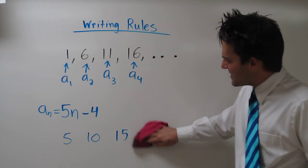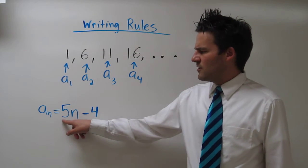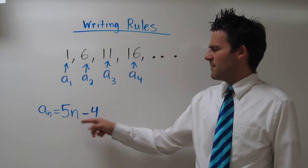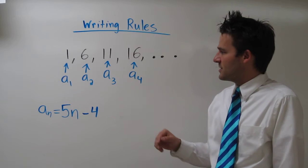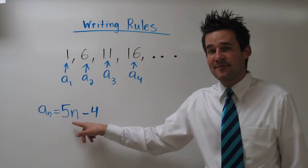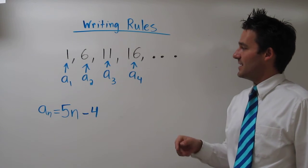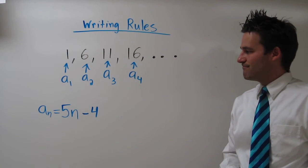Let's test that rule and see if it works. If I plug in a 1 here, will I get 1? Well, 5 times 1 is 5, minus 4 is 1. Alright, it works there. Let's try it for the fourth term. If I plug in a 4, I get 5 times 4, which is 20, minus 4 is 16. That works there, too.